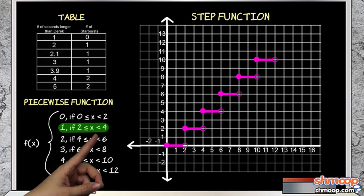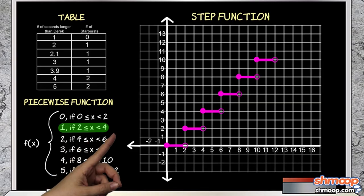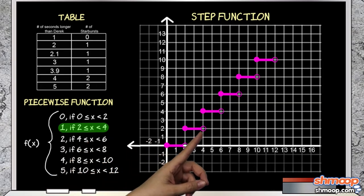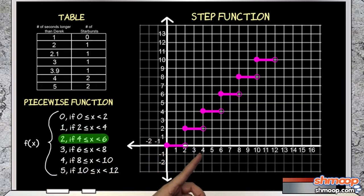Unfortunately, since the function uses the less than symbol with the 4, f of 4 doesn't equal 2 Starbursts. It actually equals 3.